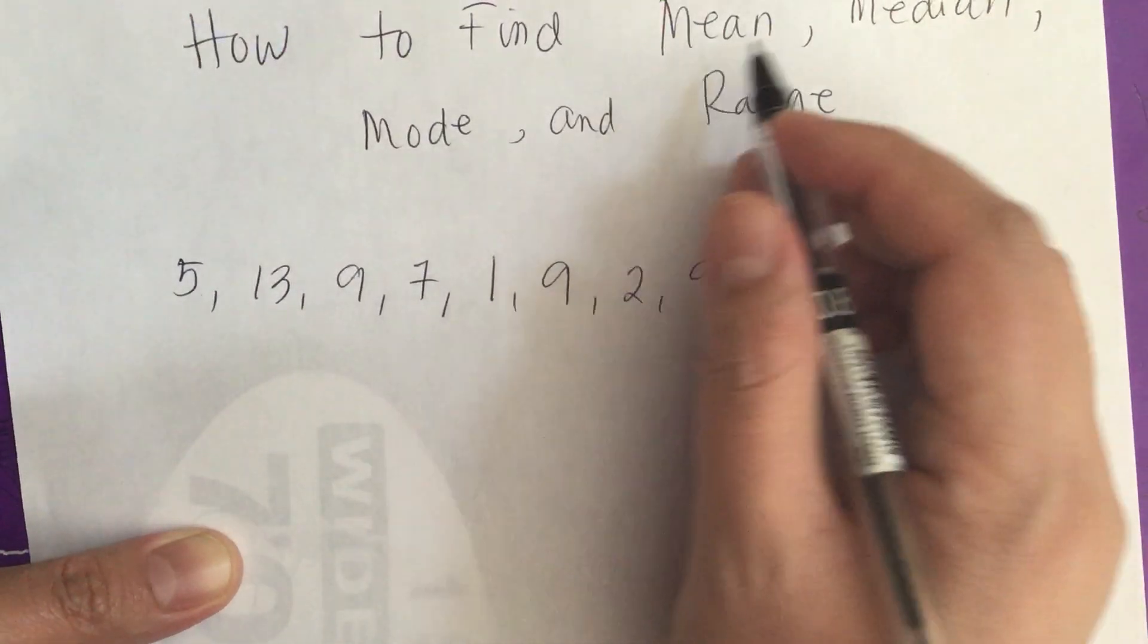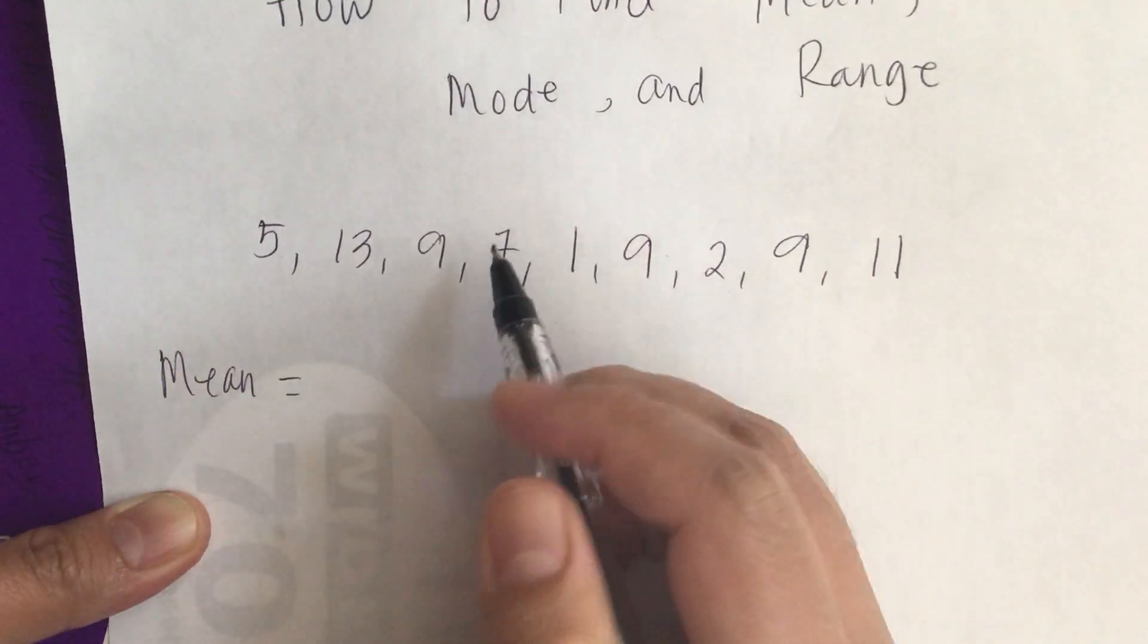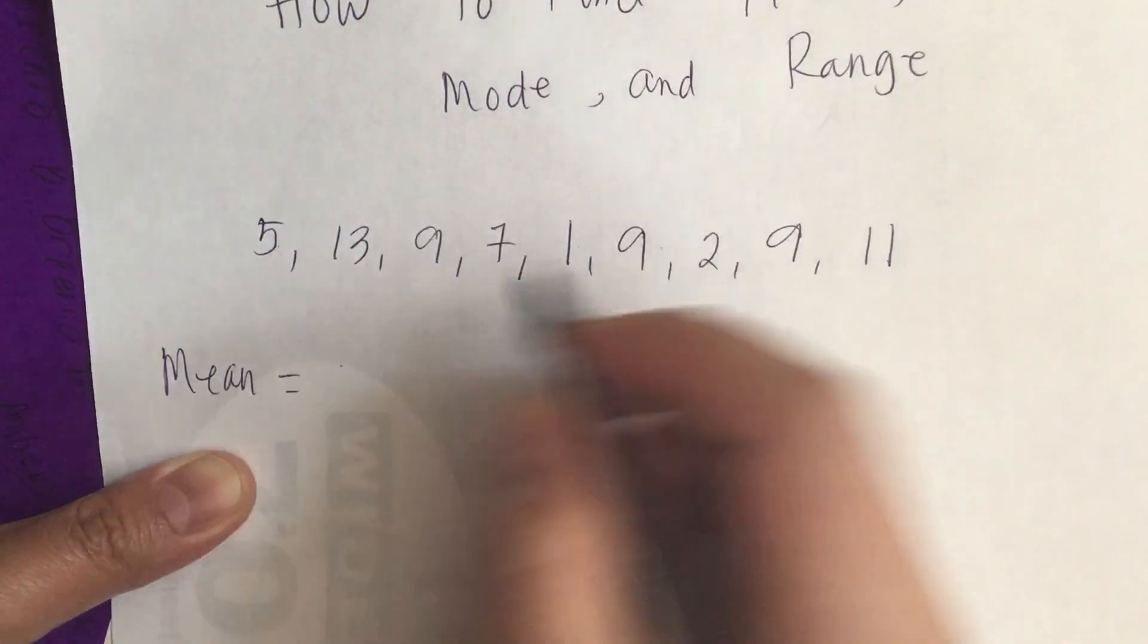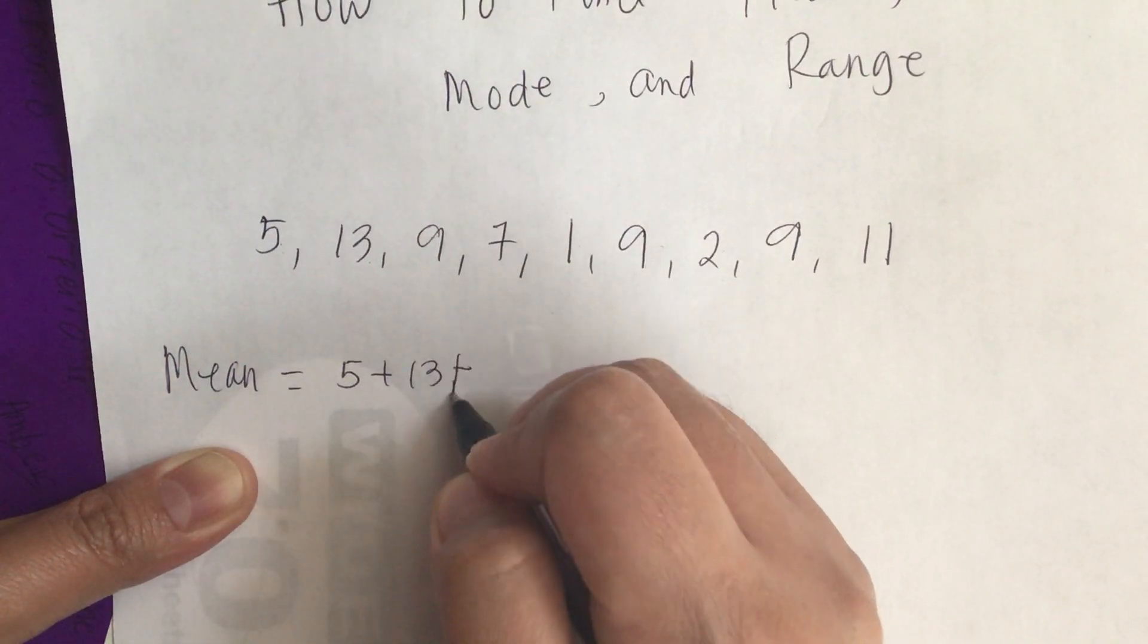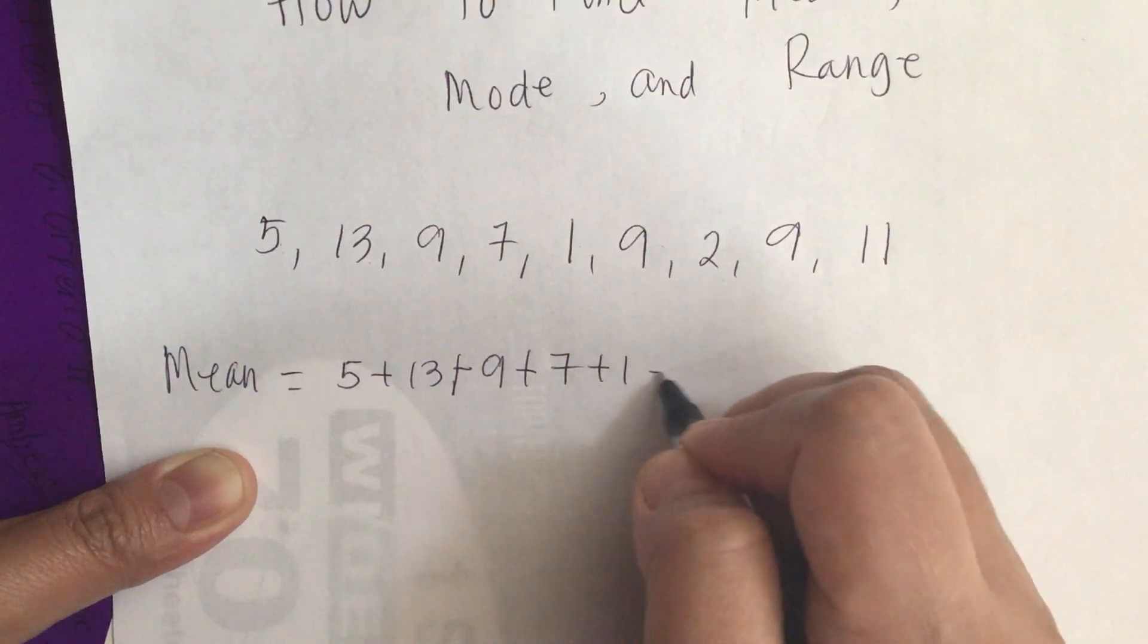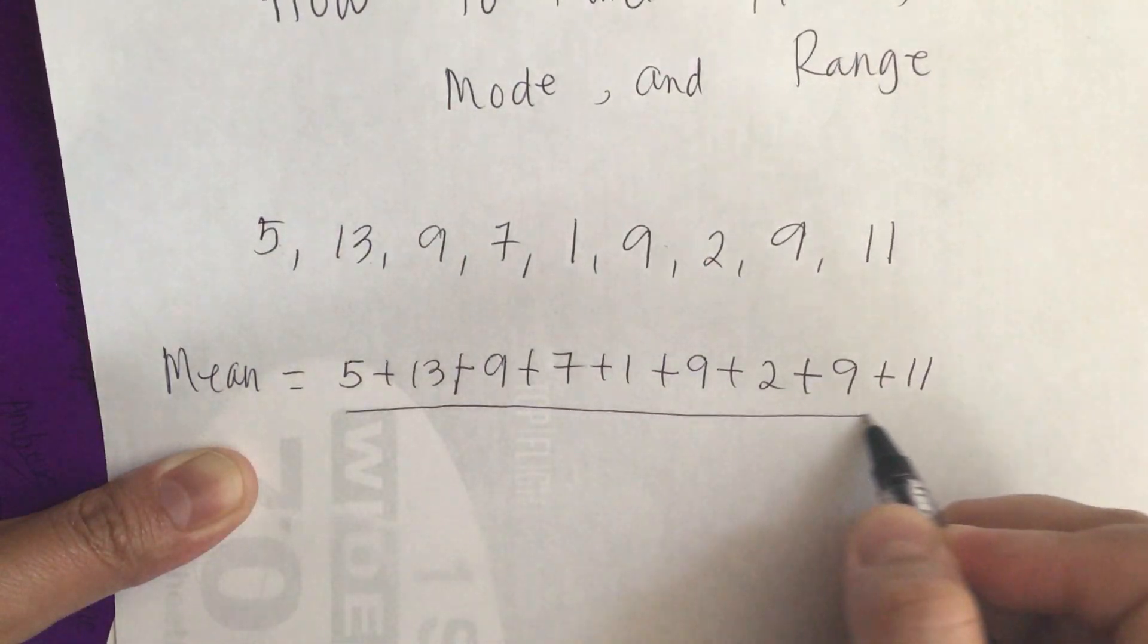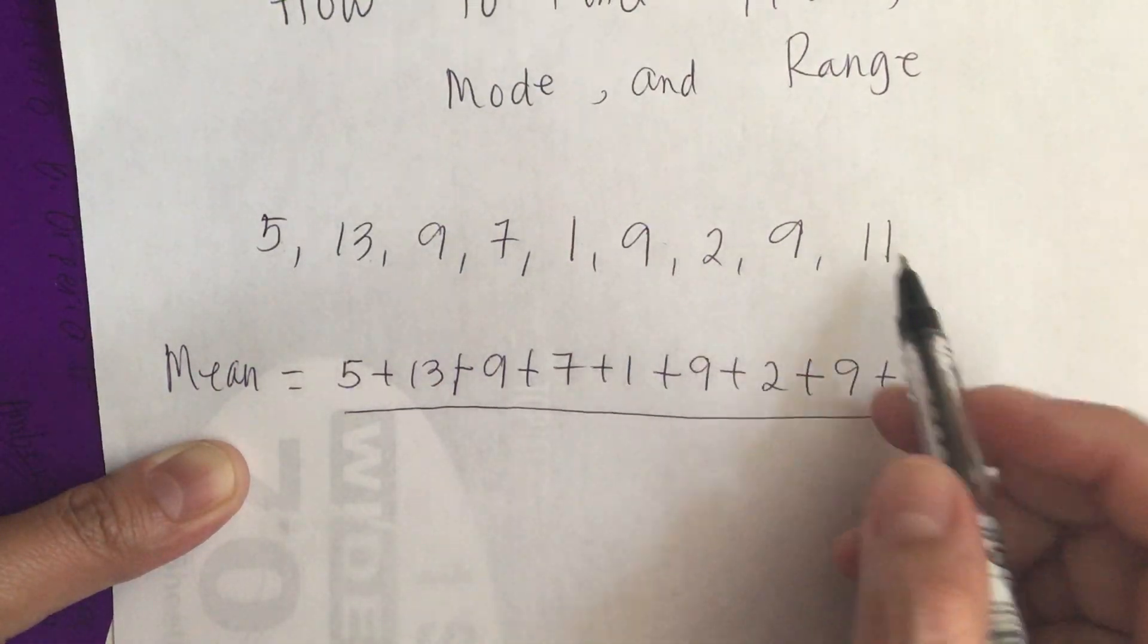To find the mean, mean is equal to 5 plus 13. We add all the numbers. We have 5 plus 13, plus 9, plus 7, plus 1, plus 9, plus 2, plus 9, plus 11. And we divide it by the number of the data set.